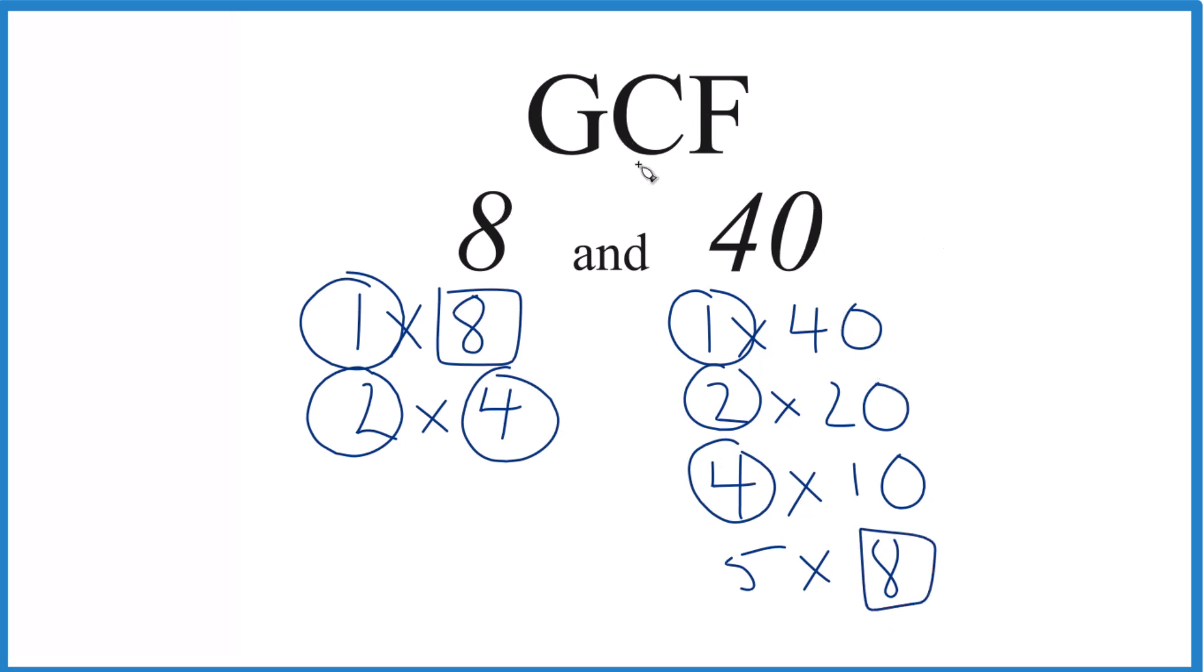So in answer to our question, the GCF for 8 and 40, that's just 8. You could do this other ways, like prime factorization, but unless you have a really big number, that's a pretty good way to do it.